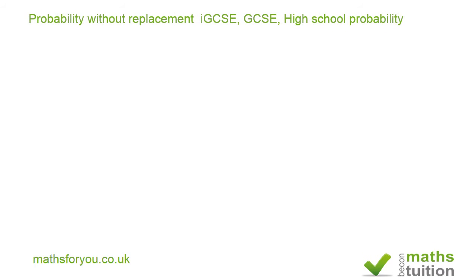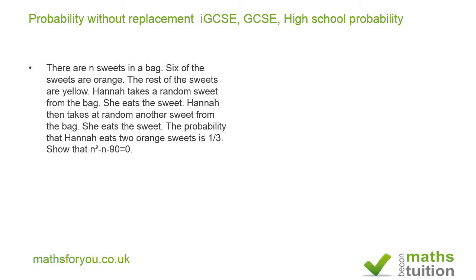Welcome to this IGCSE/GCSE higher tier question on probability. There are n sweets in a bag, six of the sweets are orange, and the rest are yellow. Hannah takes a sweet at random from the bag, eats it, then takes another sweet at random and eats that too. The probability that Hannah eats two orange sweets is one third. We need to show that n squared minus n minus 90 equals zero.